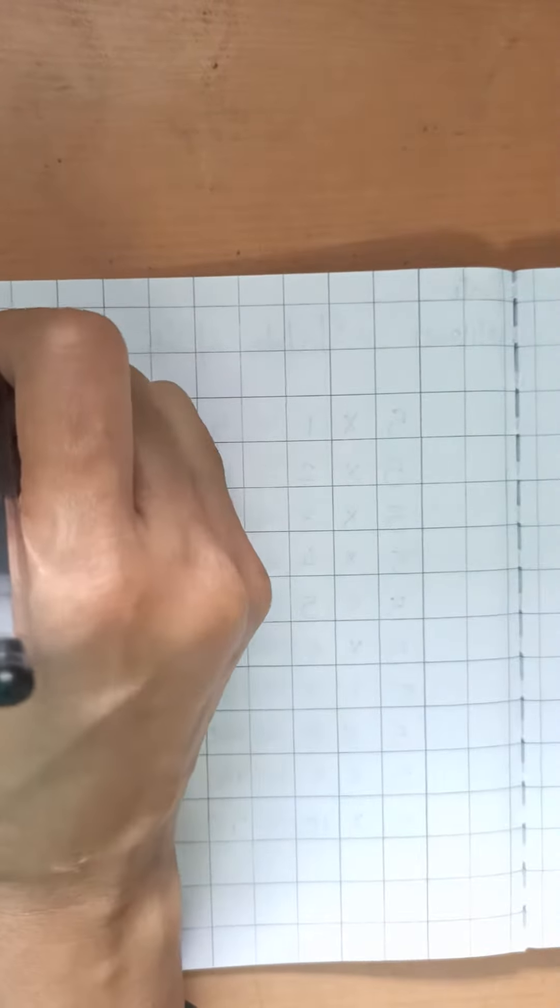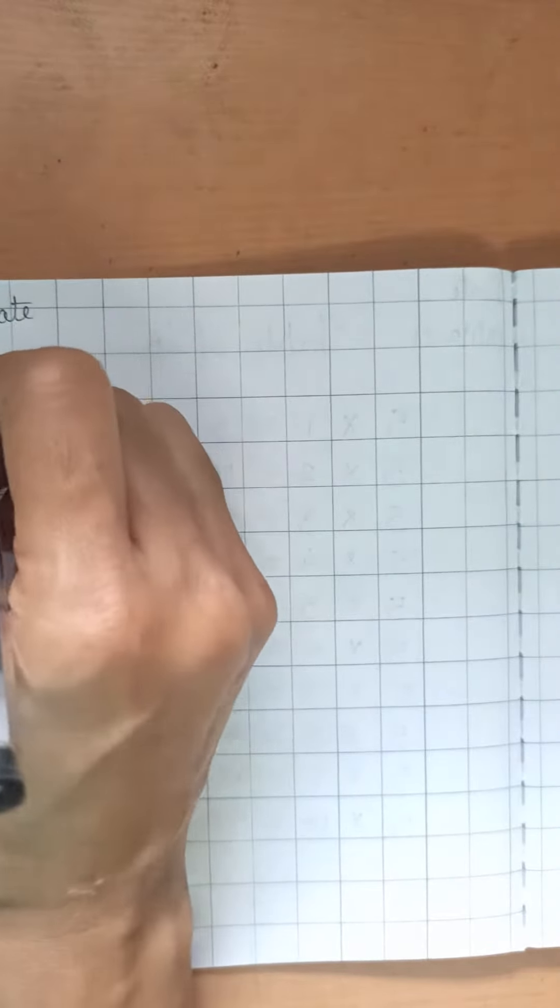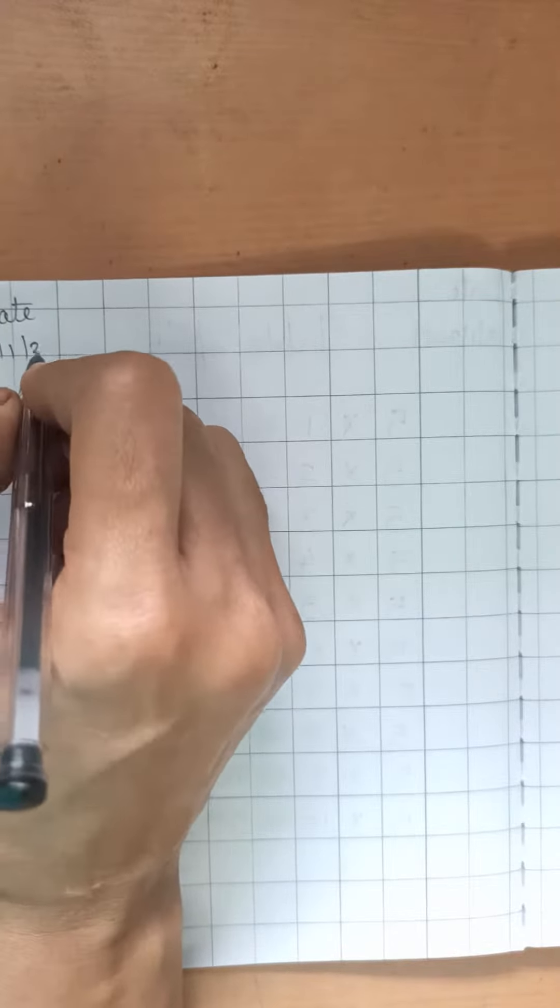Good morning children. This is your maths notebook. First of all write today's date, date 18th January 2021.